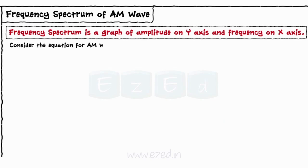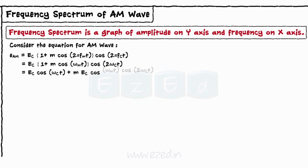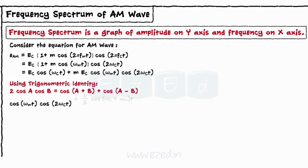Consider the equation of the AM wave. On simplifying using trigonometric identity 2cosAcosB equals cosA plus B plus cosA minus B, we get the equation.